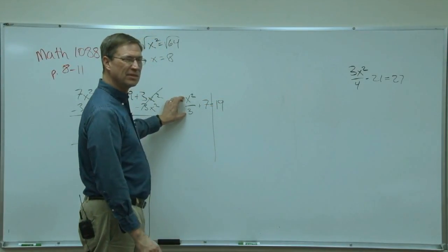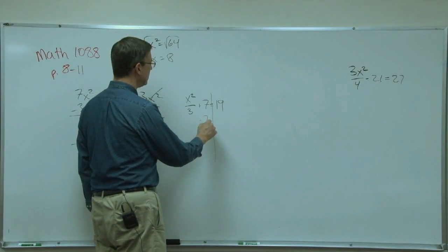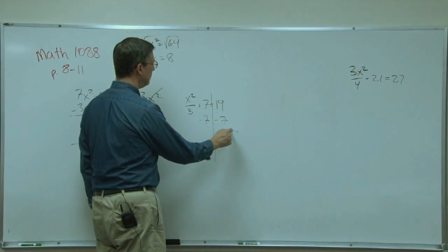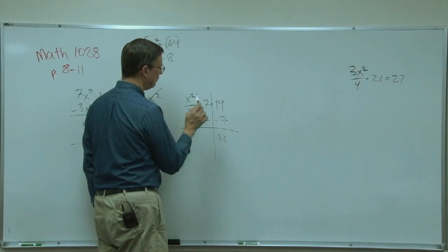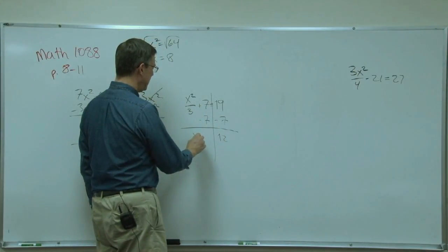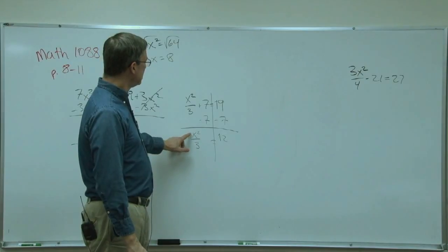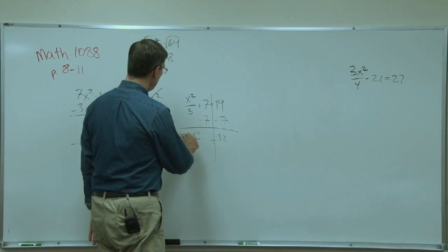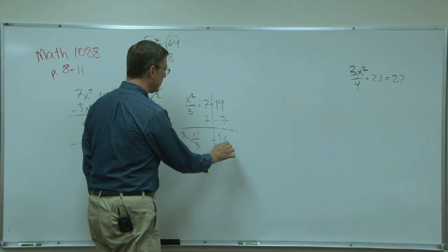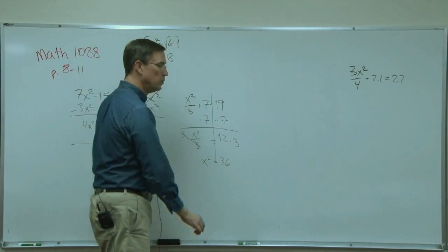We have a fraction. Sometimes fractions look a little intimidating, but this isn't going to be too bad. Let's subtract the 7 from both sides. 19 minus 7 is 12. And we have x squared over 3 equals 12. How do we get rid of this 3? Since we have this divided by 3, we're going to do the opposite operation, which would be multiply. So if I multiply by 3, then that will cancel. But I'll do the same thing on that side. So x squared equals 36.